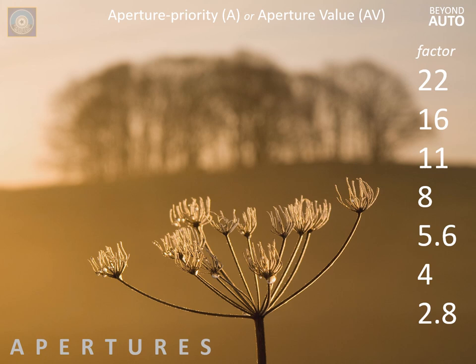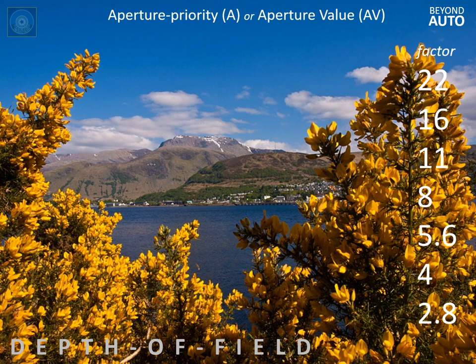Depth of field is controlled by apertures. A large aperture reduces depth of field, allowing the cow parsley to stand out from an unsharp background. On the other hand, a small aperture increases depth of field so that everything is sharp. When controlling apertures on aperture priority, the camera will automatically select the right shutter speed for a correct exposure. It should be remembered that a wide-angle lens — prime or zoom — extends depth of field at any aperture, but a telephoto does the opposite by reducing it.